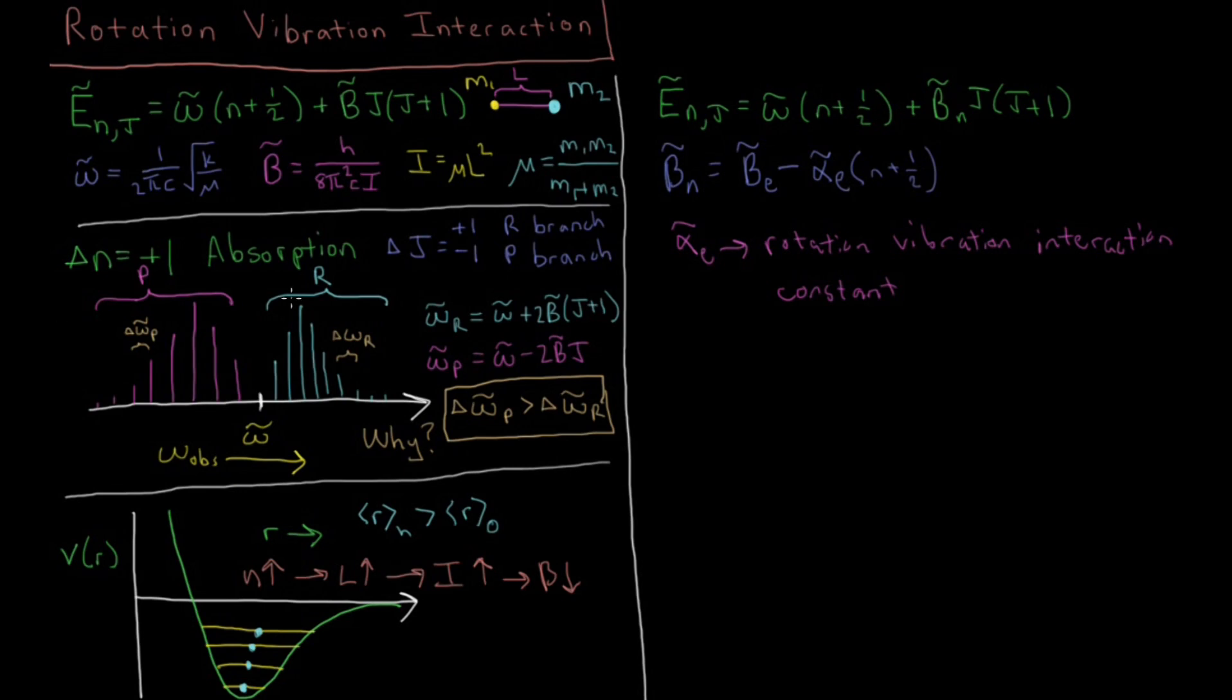Okay so what does this mean for our various energy levels here? So if we have our R branch, which has a frequency of some peak, the frequency ω̅ᵣ is going to be the energy of n equals one j equals j plus one minus the energy of n equals zero j. The transition from this level to this level.